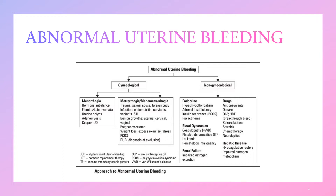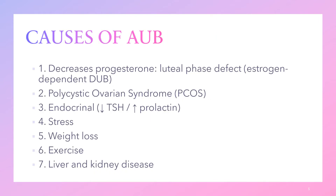Going to the non-gynecological causes, there are five major headings. For the endocrine, hyper- or hypothyroidism could be a cause. We could also have insulin resistance as seen in polycystic ovarian syndrome. Blood dyscrasias could be another cause, including coagulopathy, platelet abnormalities, leukemia, or hematologic malignancy. Some drugs such as steroids, spironolactone, neuroleptics, and more could also cause abnormal uterine bleeding. The causes can be summarized under seven major headings.